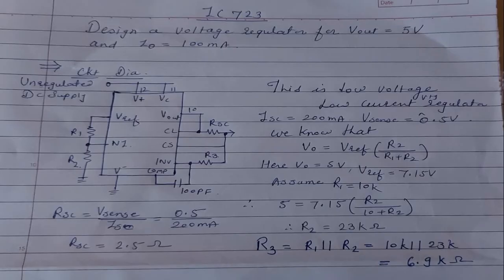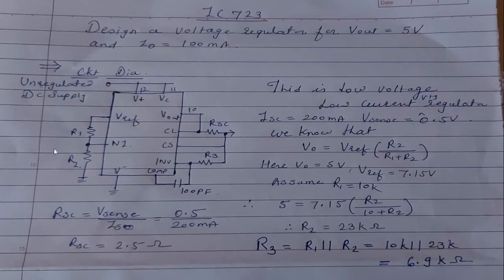We will first discuss the design of a voltage regulator for Vout equal to 5 volts and output current equal to 100 milliamperes. Vout of 5 volts is less than 7 volts and the current is less than 150 milliamperes, so this is a low voltage, low current voltage regulator.